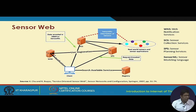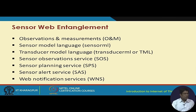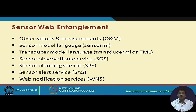In sensor web, we have different types of servers handling web notification services, sensor collection services, planning services, and modeling languages. Concepts include observations and measurements, SensorML — a kind of extended XML modeling language supporting sensor modeling, similar to UML — then transducer modeling language, sensor observation service, sensor planning service, sensor alert service, and web notification service. All these together constitute the sensor web.